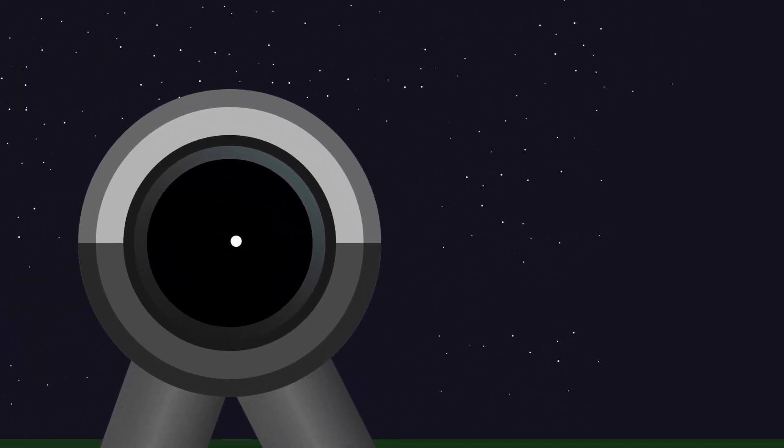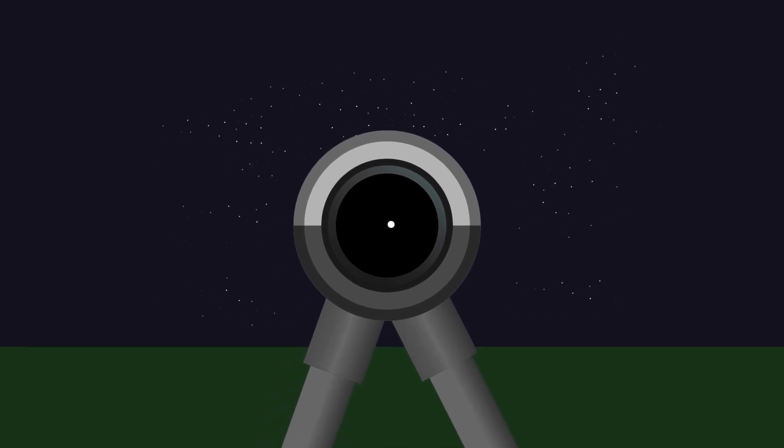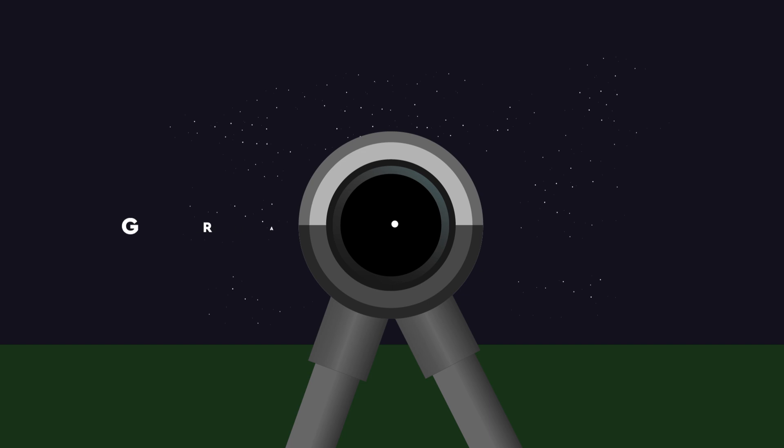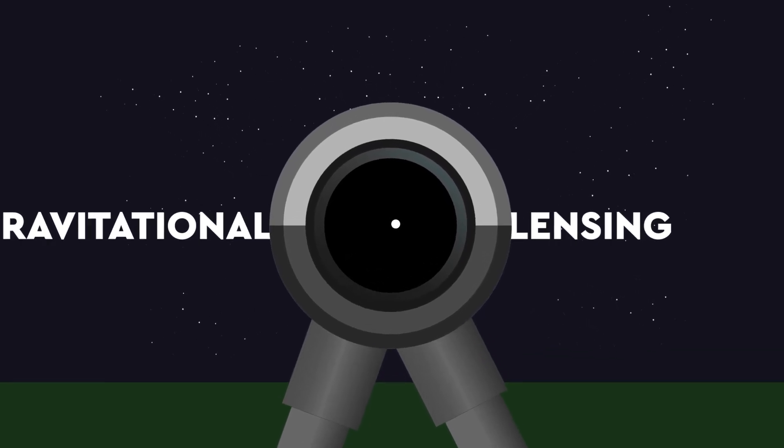And while we're on the subject of black holes and light, because they're so massive, their gravity can warp space and time. What this means in practice is that light coming from objects behind a black hole would be bent, distorted and magnified. This phenomenon is called gravitational lensing and is a bit like looking at the universe using a funhouse mirror.